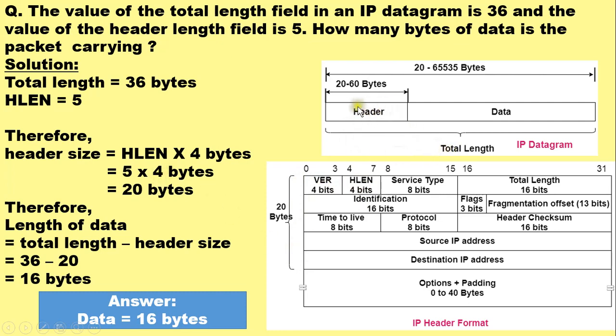And therefore the length of data is equal to total length minus the header size. Once we know this header size in bytes and we have the data for total length, we can easily determine the length of the data as total length minus the header size. So here the given values are: total length is 36 bytes.